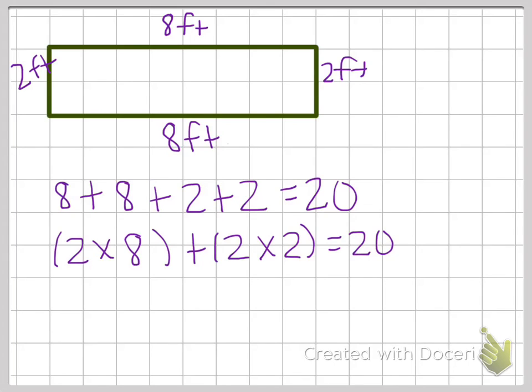The rule or the formula for the perimeter of a rectangle is P equals two times L plus two times W. That means the perimeter is two times the length plus two times the width. So all we're doing is we're doubling the length, we're doubling the width, and we're adding them together to find the perimeter.